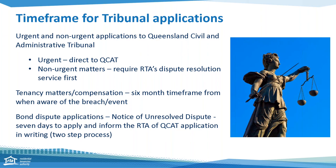For bond disputes — usually a response to the notice of claim process — once conciliation has been completed and if not resolved, you will be issued a notice of unresolved dispute. You then have seven days to apply to the tribunal and inform the RTA of your QCAT application in writing. It's a two-step process: apply within the seven days and also inform the RTA within the seven-day timeframe. Whether it's a tenancy matter or a bond matter, do not leave everything to the last minute — particularly bond applications. It's a short timeframe, so have everything ready to go once you receive that notice.